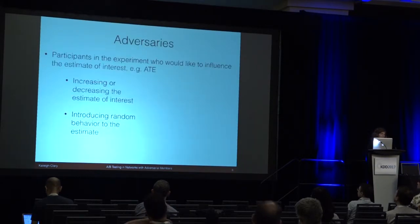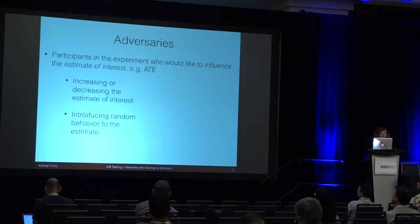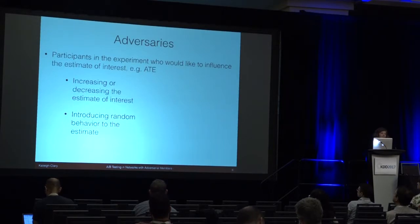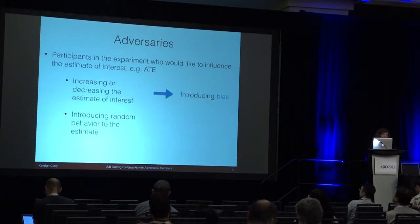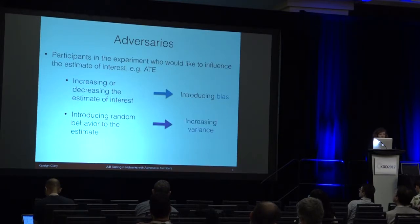We're going to refer to that person as an adversary. Generally, these are participants in the experiment who would like to influence the estimate of interest — we're going to be looking at average treatment effect, but you can imagine using other estimates. What these individuals would like to do is either increase or decrease the estimate of interest, which will introduce bias. You could also consider an individual who just wants to introduce random behavior, which will increase variance. We'll be focusing on the situation where you want to introduce bias.